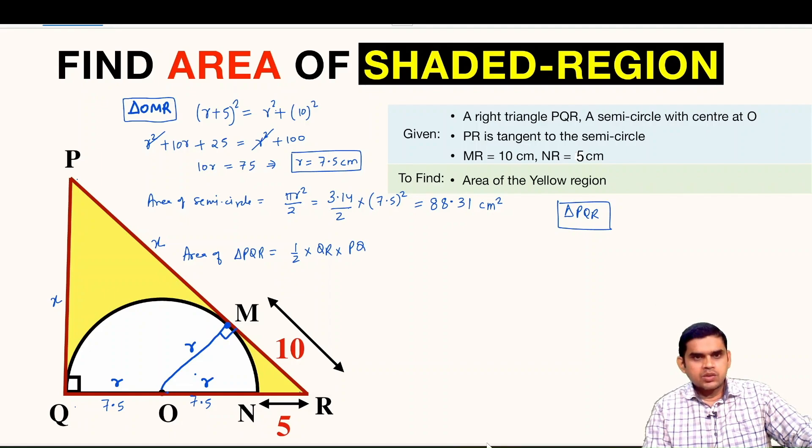And from there two tangents are drawn, PQ and PM. See specifically it is mentioned in the question that PR is a tangent, but we can see that PQ is also a tangent because this is 90 degrees.